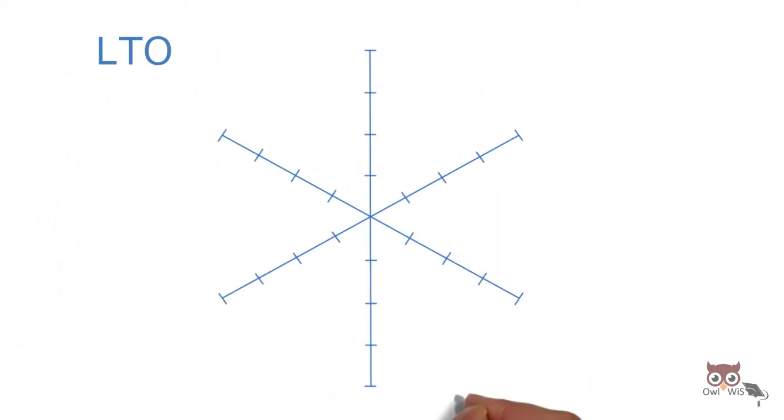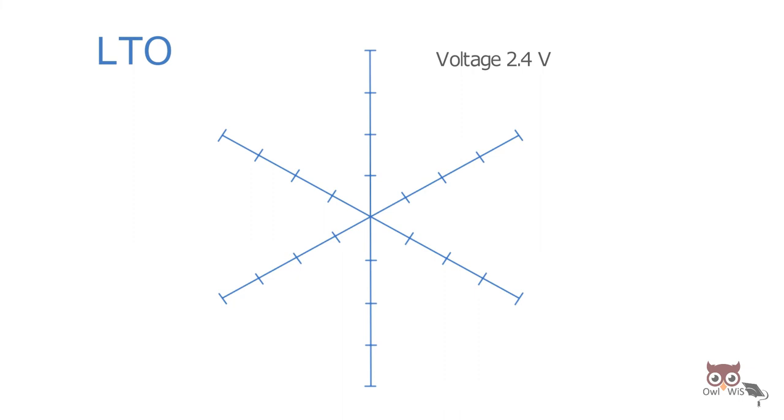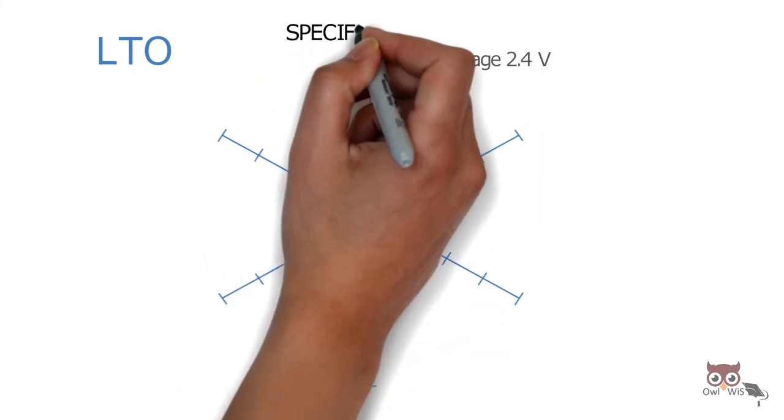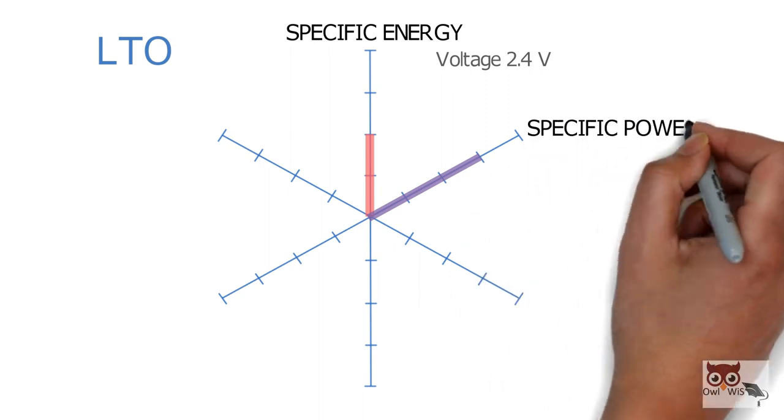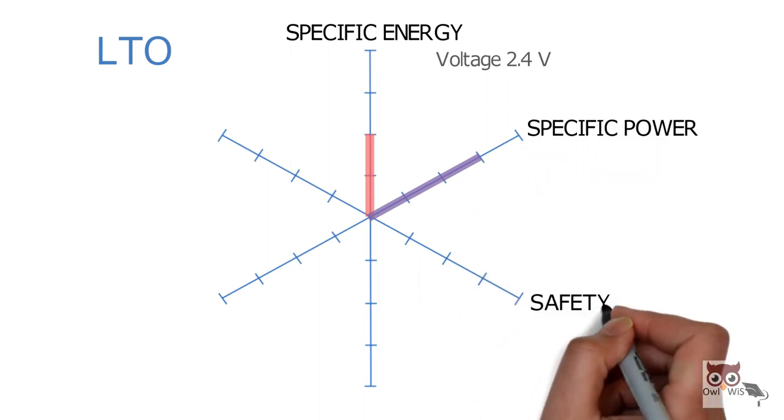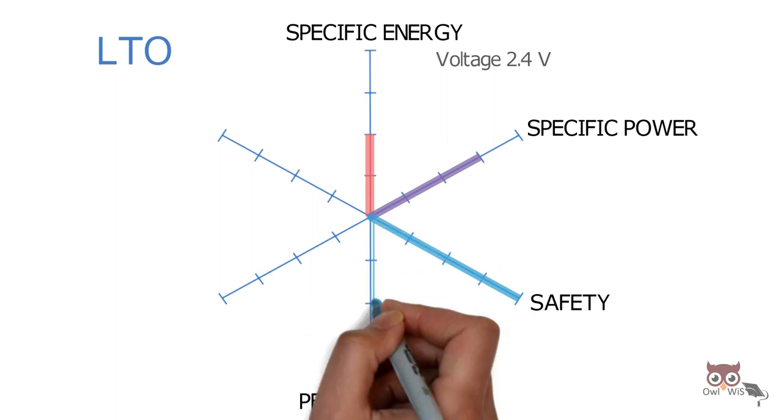LTO has a low voltage of 2.4V, resulting in relatively low specific energy with optimum specific power. When it comes to safety, it is one of the safest batteries of all, with very high performance.